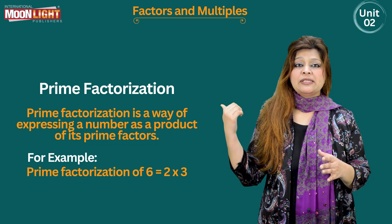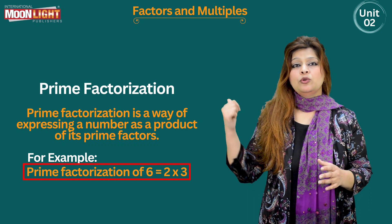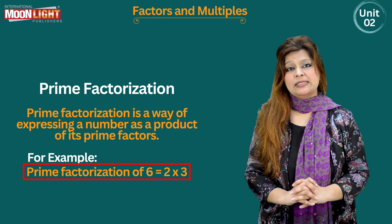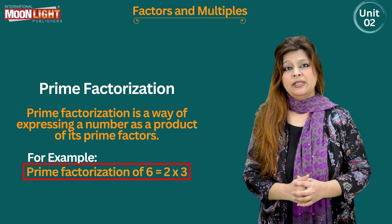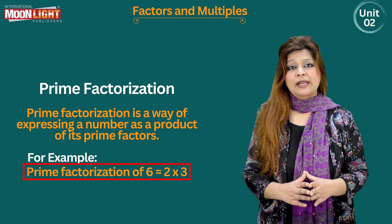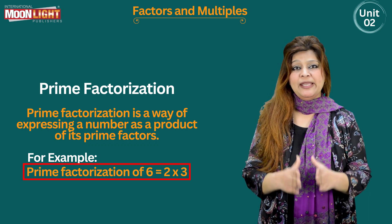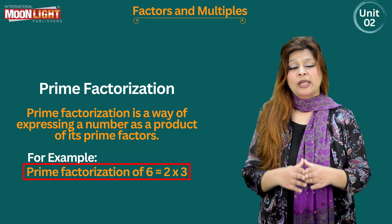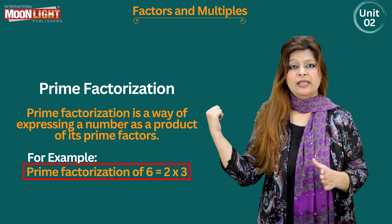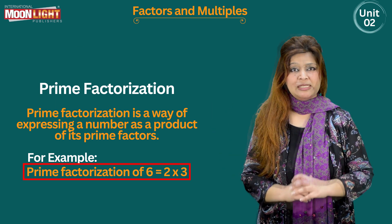For example, we have the number six. The prime factorization of the number six equals two multiplied by three, because the number six is divisible by two and three. We write it as a product, with a multiplication sign in between: two multiplied by three. So this is the prime factorization of the number six.